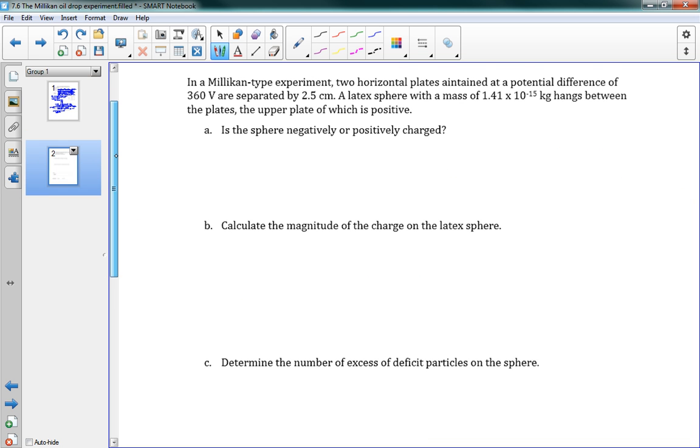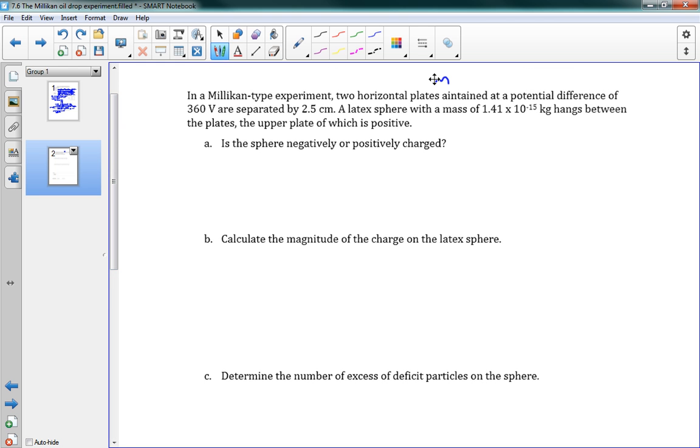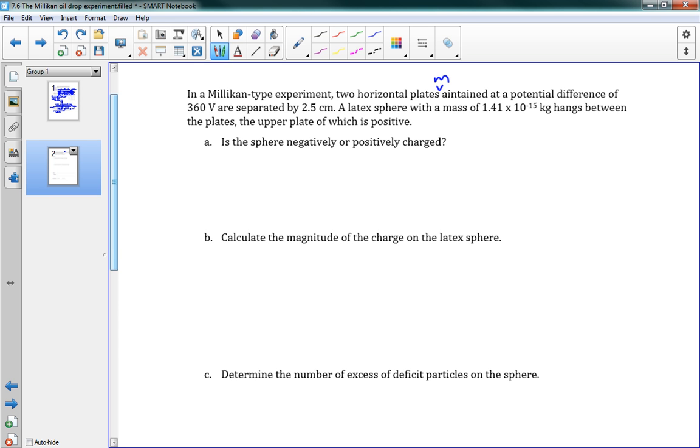If you turn to the next page, we're going to do a bit of the math ourselves in a Millikan-type experiment. We have two horizontal plates are maintained at a potential difference of 360 volts are separated by 2.5 centimeters. A latex sphere with a mass of 1.41 times 10 to the negative 15 kilograms hangs between the plates, the upper plate of which is positive. The first question is, is the sphere negatively or positively charged? Well, I'm just going to quickly draw our picture here. We've got a positive plate. We've got a negative plate. And then we've got our sphere here. And we can say this is 2.5 centimeters. That's our separation.